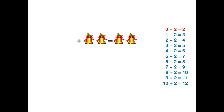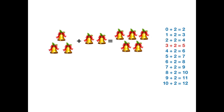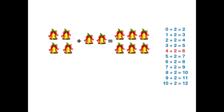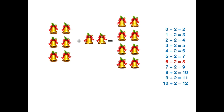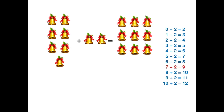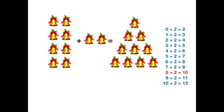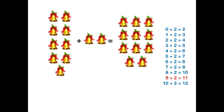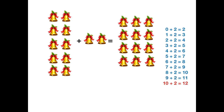Adding 2 to a number. 0 plus 2 equals 2. 1 plus 2 equals 3. 2 plus 2 equals 4. 3 plus 2 equals 5. 4 plus 2 equals 6. 5 plus 2 equals 7. 6 plus 2 equals 8. 7 plus 2 equals 9. 8 plus 2 equals 10. 9 plus 2 equals 11. 10 plus 2 equals 12.